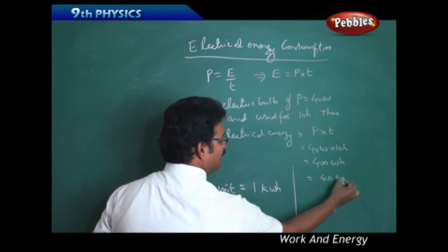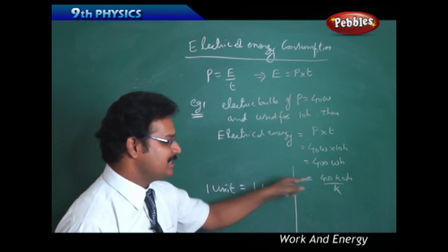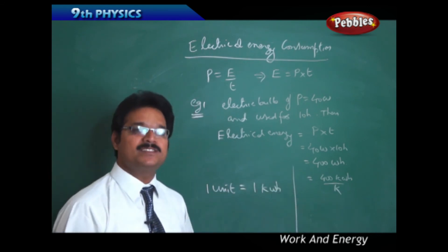To convert kilowatt hours means you should have k here. So what I do, I write 400 kWh by k so value do not change. But what is k? K means 1000.